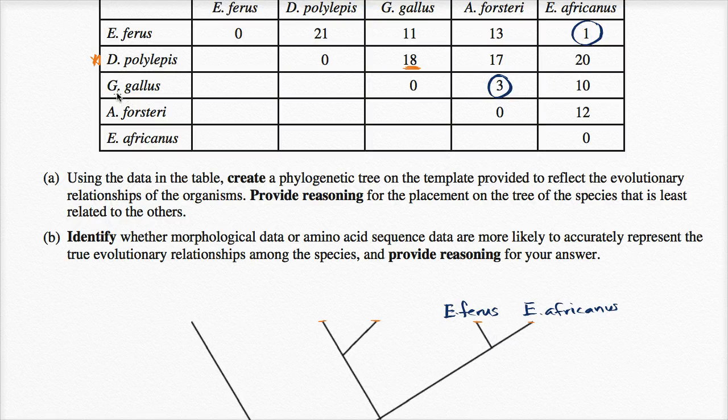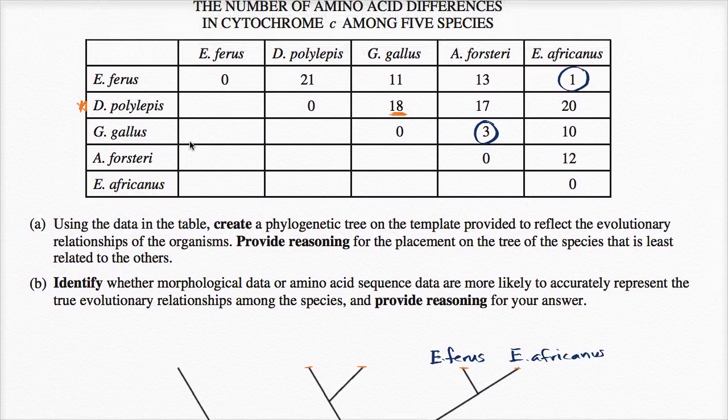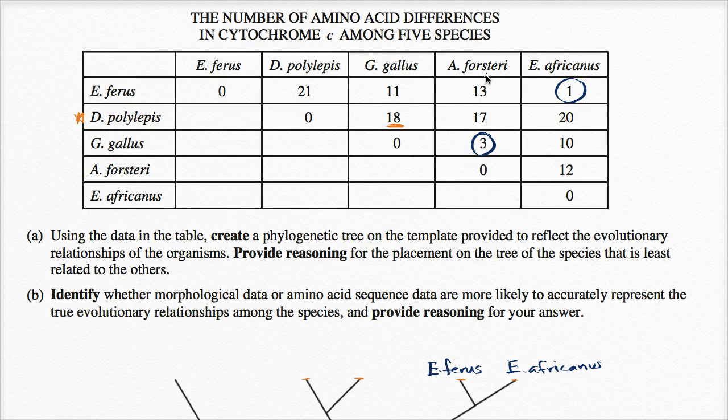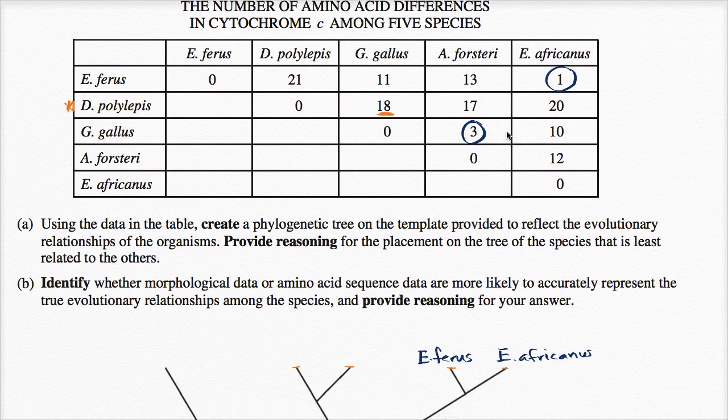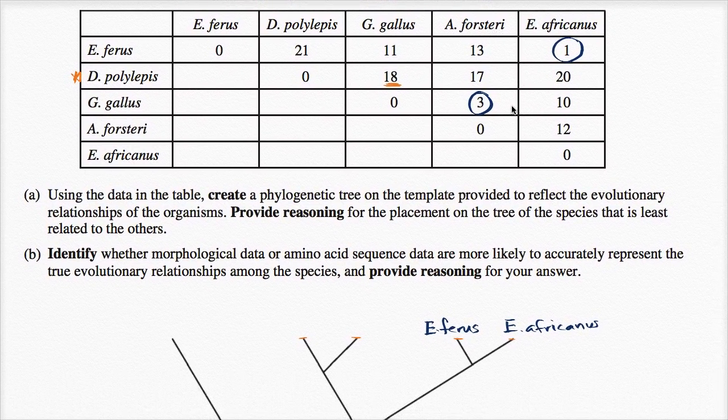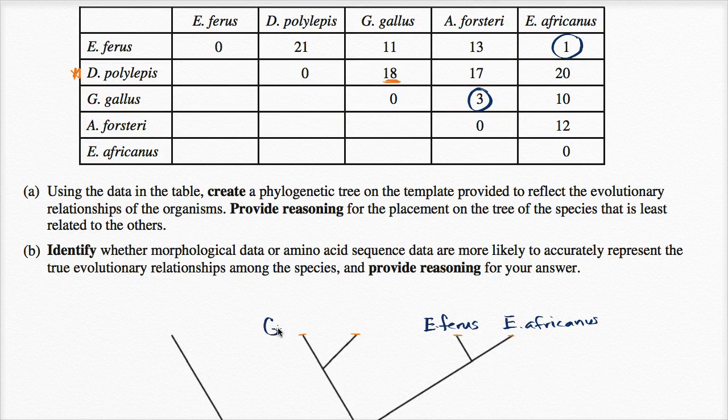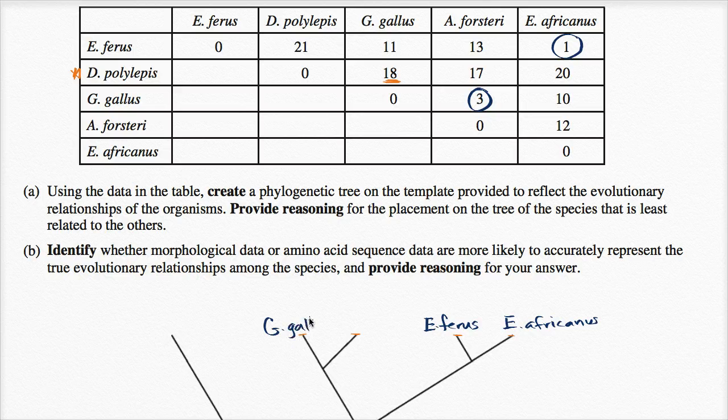And so, that's the number of sequence differences or the amino acid differences between G. gallus and A. forsteri. However you pronounce that. So, I would say those are probably pretty closely related. And so, let me write this here. G. gallus and A. forsteri.